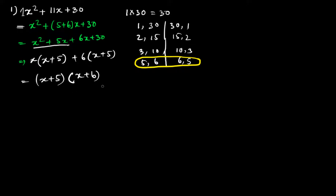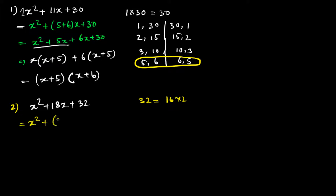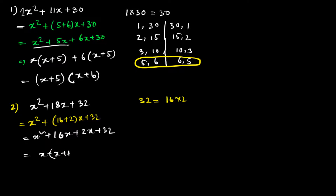The second question is x² + 18x + 32. In the same way, factorizing 32, I need to get 18. The pair 16 × 2 gives 18 by adding them. So x² + 16x + 2x + 32 gives x(x + 16) + 2(x + 16), which equals (x + 16)(x + 2). That's the answer for question 2.